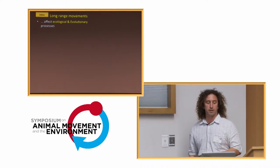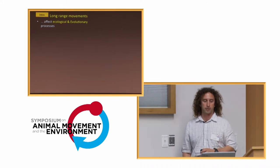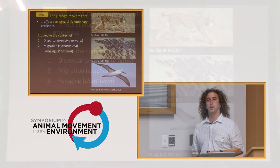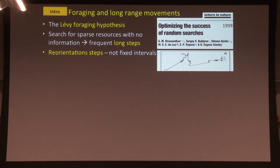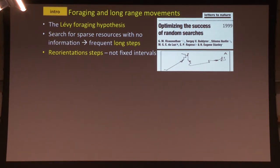This is a captive audience so I don't have to convince you that long-range movements are important. As we've seen throughout the talks, they're usually studied either in the context of dispersal, migration, or foraging movements. This aspect of foraging movements was boosted around 15 years ago by a publication in Nature, which came to be known as the Levy flight or Levy foraging hypothesis. This hypothesis suggests that when animals have no information on the environment and are searching for sparse targets, they should combine local movements with relatively frequent long steps.